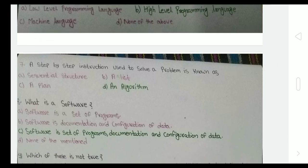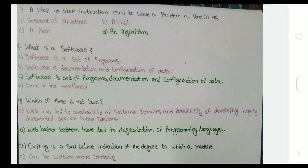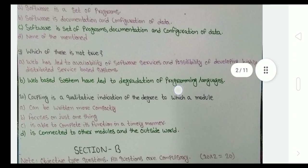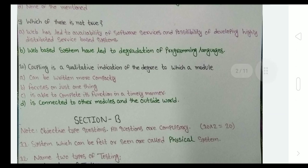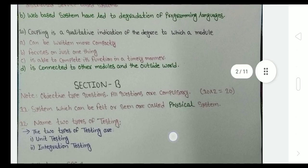C is known as a high level programming language. A step-by-step instruction used to solve a problem is known as an algorithm. What is software? The answer is C. Which of these is not true? Web-based systems have led to degradation of programming languages. This one is a false statement, so the answer will be B. Coupling is a qualitative indication of the degree to which a module is connected to other modules and the outside world. The answer is D.